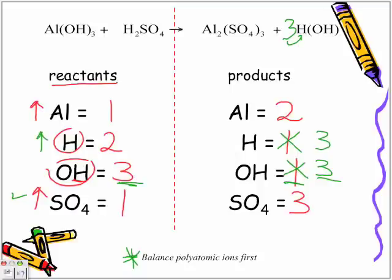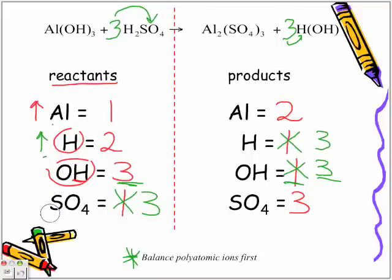We now need to increase the hydrogens on the reactant side. We need to increase aluminum. We need to increase sulfate. But again, we're going to balance polyatomics first. So this one sulfate is not enough — what number am I going to put here in front of this sulfate? I'm going to put the number three. By multiplying it by three, we now have a total of three sulfates, which means I no longer need to balance the sulfates. Sulfates so far are balanced — but let's not jump the gun. We'll find out if that's the right number as we go on.